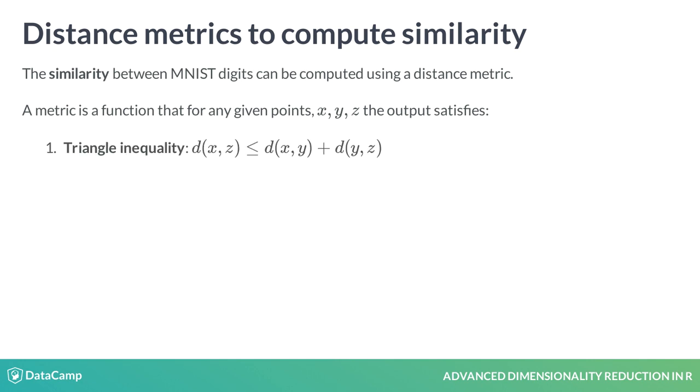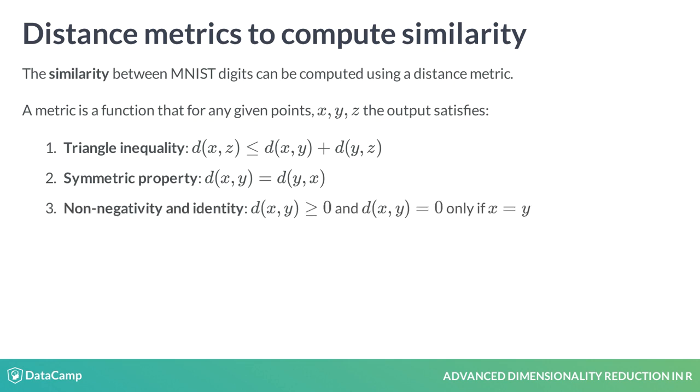First, the triangle inequality, which means that the distance between two vectors is the shortest distance along any path. Second, the symmetric property—that is, the distance between X and Y is the same in either direction. And third, the distance is positive between two different vectors and is zero from a vector to itself.